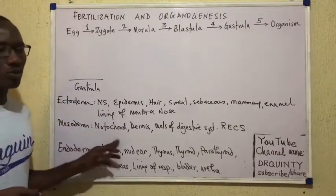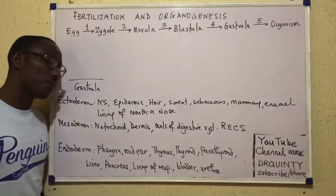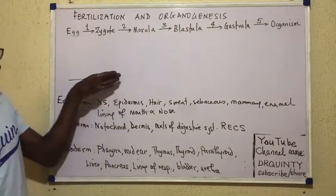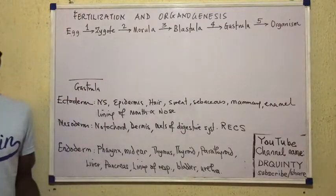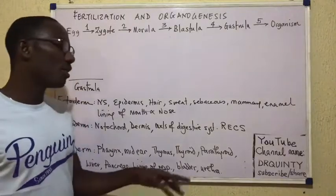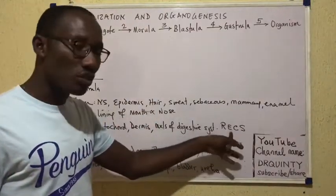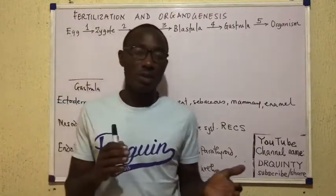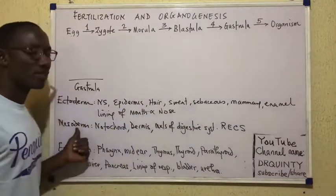For the mesoderm, we have the notochord — the equivalent of the backbone for vertebrates. Then we also have the dermis, which is the true skin lying below the epidermis. Beyond the dermis, we have the involuntary muscles of the digestive system — those are mesodermal in origin. Then there's a mnemonic REX: R is the reproductive system, E is the excretory system, X is the circulatory system, and S is the skeletal or musculoskeletal system. So things like muscle, bone, cartilage, and connective tissues generally come from the mesoderm — all mesodermal in origin.